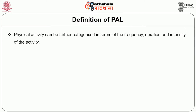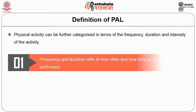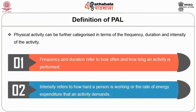Physical activity can be further categorized in terms of frequency, duration, and intensity. Duration and frequency refer to how often and how long an activity is performed. Intensity refers to how hard a person is working or at what rate of energy expenditure for doing an activity.